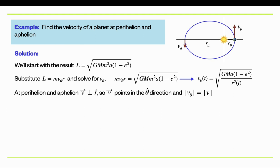At perihelion, the velocity vector must be purely tangential — there's no radial component because the planet is neither getting closer nor farther from the star. So v_θ equals the total speed. We know the perihelion distance is a(1 − e), so we plug that in for R². We get a²(1 − e)² in the denominator, and writing (1 − e²) as (1 − e)(1 + e), the (1 − e) terms cancel.